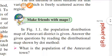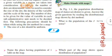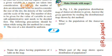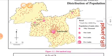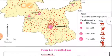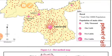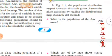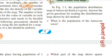Ab kuch questions karte hain jo figure 1.1 ke andar diye gaye hain. First: what is the population of Amravati town? Amravati ka circle sabse bada hai map ke andar, toh Amravati mein 5 lakh population hai. The population of Amravati town is 5 lakh. Second question: name the place having a population of 1 lakh on the map. Map ko zoom karke dekhen — sabse chota circle phir Warud, phir Achalpur, phir Amravati. Second number Warud hai — the place with a population of 1 lakh on the map is Warud.